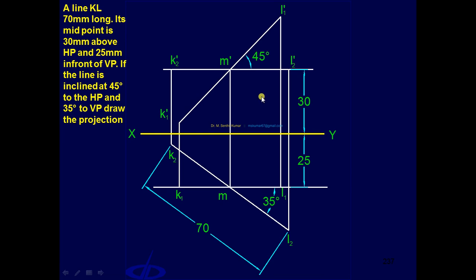Then, draw locus through L1 dash, K1 dash, K2, L2. Next step, M dash as center, L2 dash as radius, draw arc and get L dash. Similarly, M dash as center, K2 dash as radius, draw arc and get K dash.